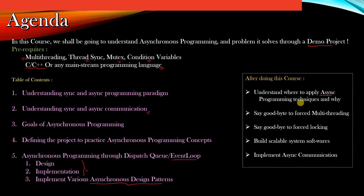You will be able to say goodbye to forced multi-threading and forced locking. You will know how to build scalable system software, and finally you will be able to implement asynchronous methods of communication between two different processes, threads, or modules of a software. Good luck guys — this is going to be a very interesting course and you will be exploring new methods of developing system software altogether.